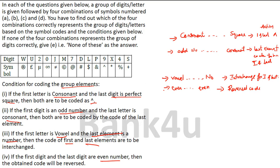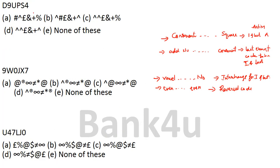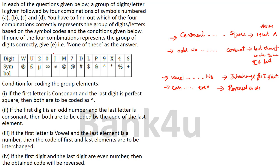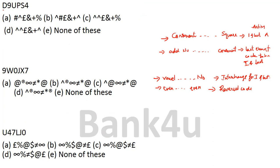Let's deal with Question 1: D9UPS4. We only need to look at the first and last elements. The first one is D — a consonant. The last one is 4 — a perfect square. So Condition 1 applies: both first and last are coded as 'cap'. The middle elements 9, U, P, S are coded normally: cap, pound, and, plus.